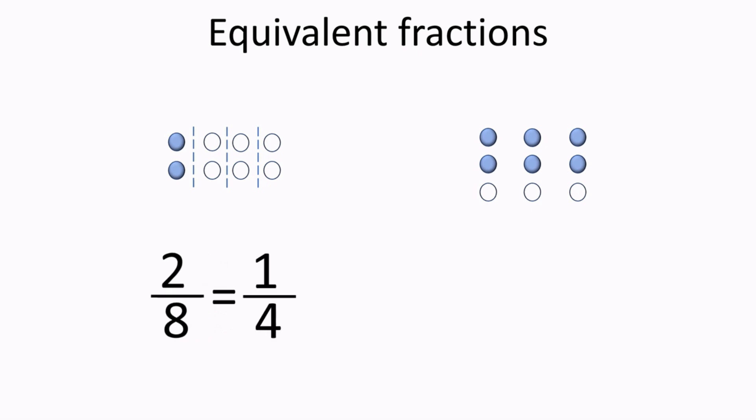What about the second set of circles? We have 6 circles shaded out of a total of 9 circles. If we look closer, we will also notice that we have 3 rows of 3 circles,